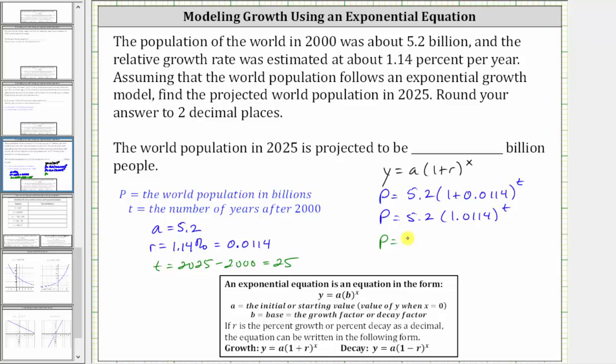We have p equals 5.2 times 1.0114 raised to the power of 25. And now we go to the calculator and round the value to two decimal places.